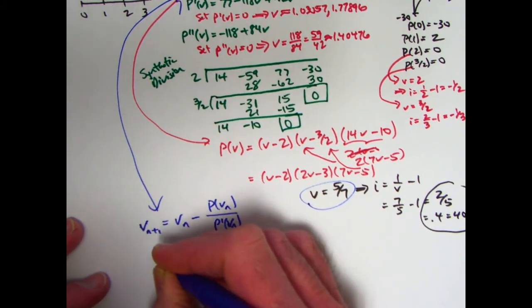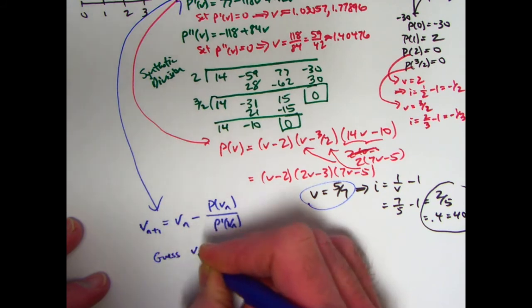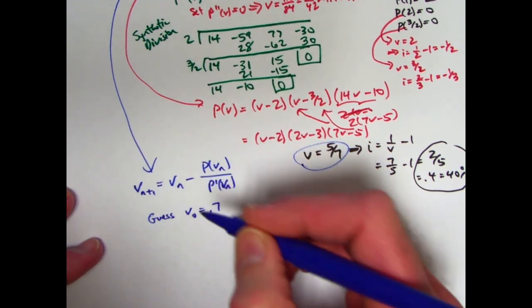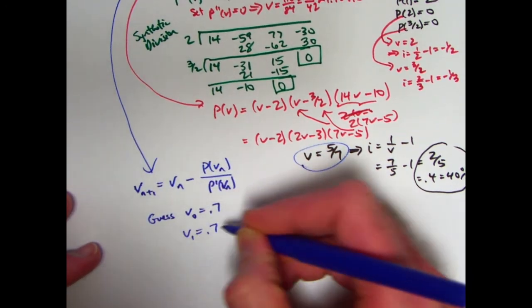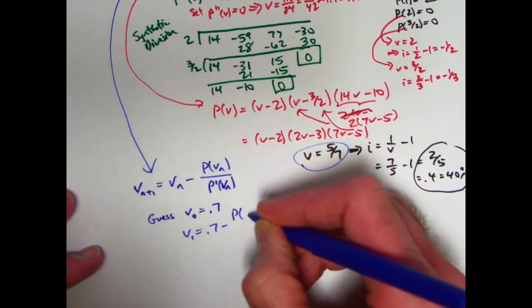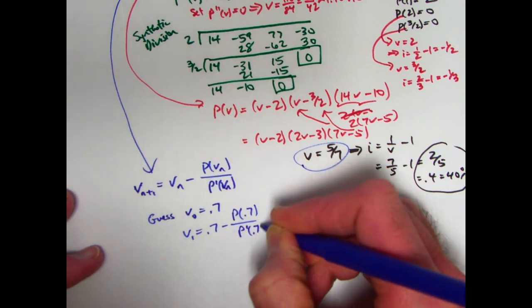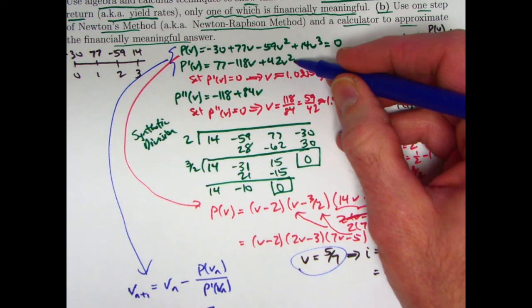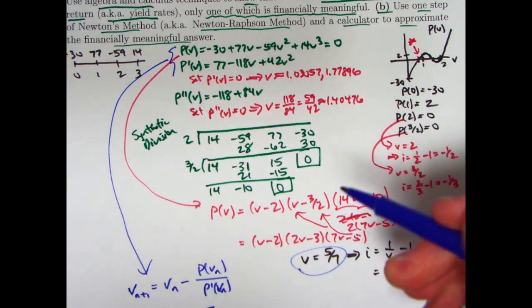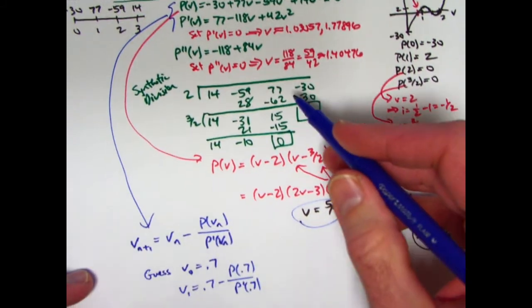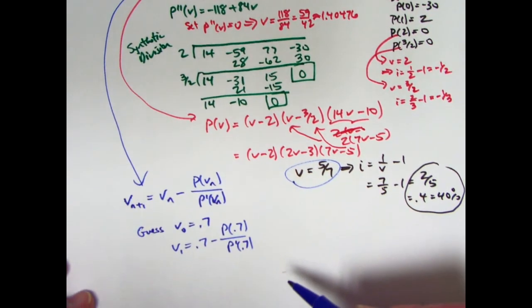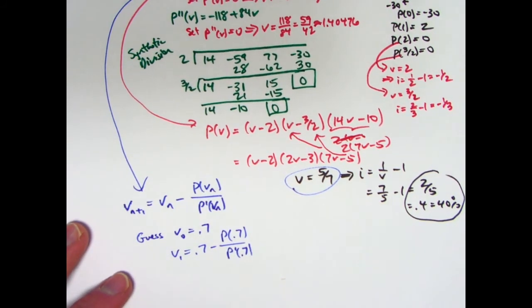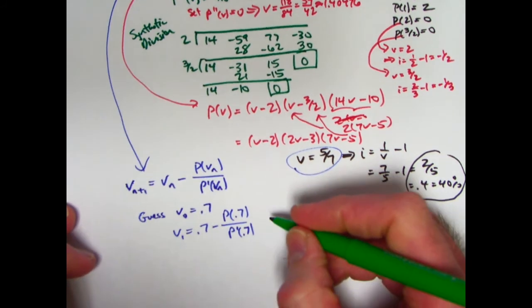I didn't do it ahead of time, so negative 30 is at time 0. Enter that. Tab down. 77 is at time 1. Enter that. Tab down. Leave the frequency at 1. Negative 59 is at time 2. Enter that. And positive 14 is at time 3. Enter that. Now type IRR compute. And you get the non-financially meaningful one. Negative 33 percent corresponding to giving you the i of negative 1 third. It's giving you that one. That's not financially meaningful again because we are receiving more money than we are investing. We're investing 89, receiving 91 more. It's got to be a positive i that's financially meaningful.